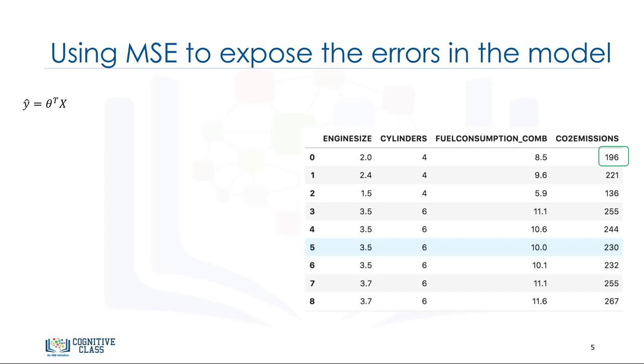Let's assume for a moment that we have already found the parameter vector of our model. It means we already know the values of theta vector. Now we can use the model and the feature set of the first row of our data set to predict the CO2 emission for the first car. If we plug the feature set values into the model equation, we find y hat.